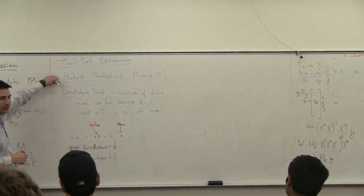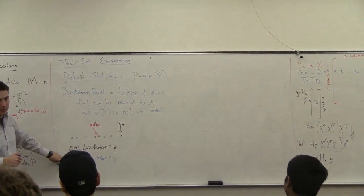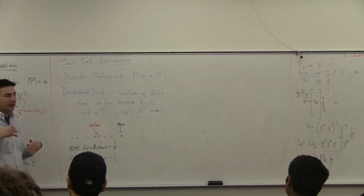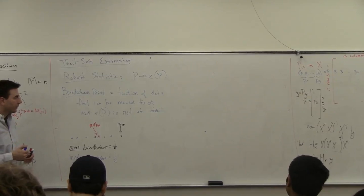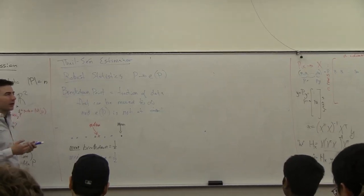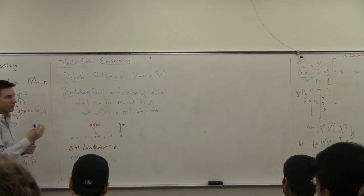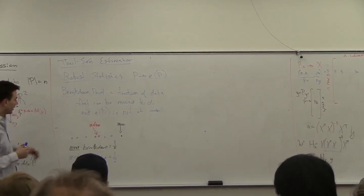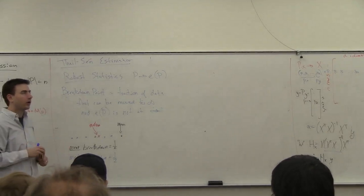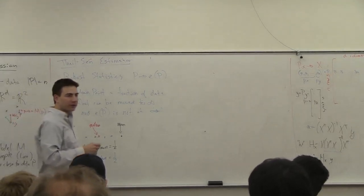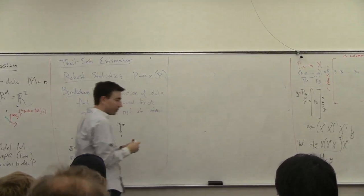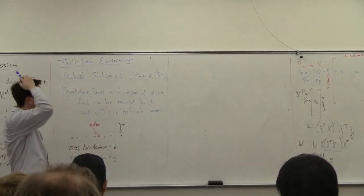A statistic which is robust is one that has a high breakdown point — you can have a large fraction of outliers and still compute the statistic and have it not be affected too much. The Theil-Sen estimator was, I think, one of the first types of robust statistics proved for linear regression. The least absolute difference is also some form of robust estimator, but the Theil-Sen estimator is going to be even simpler to work with and to calculate.